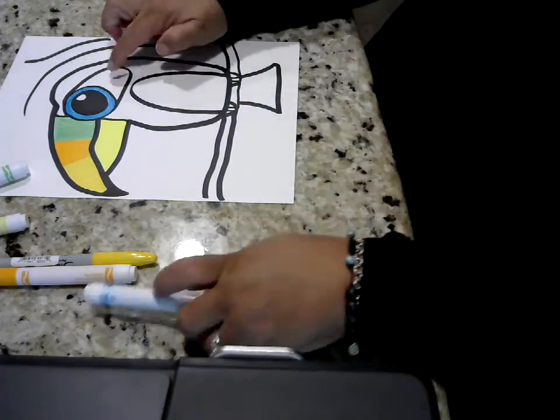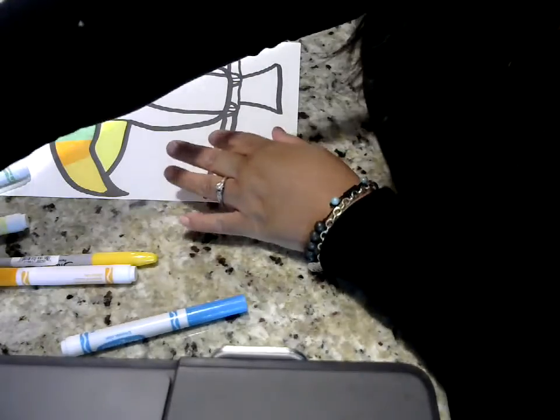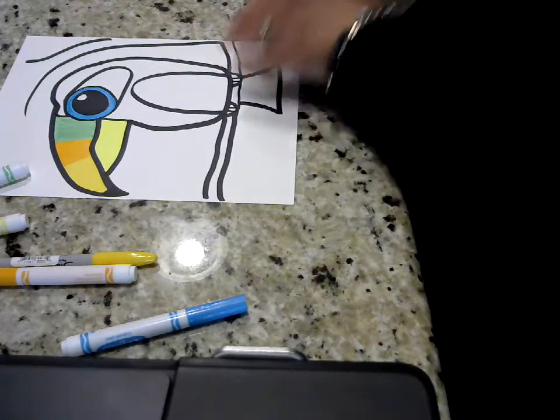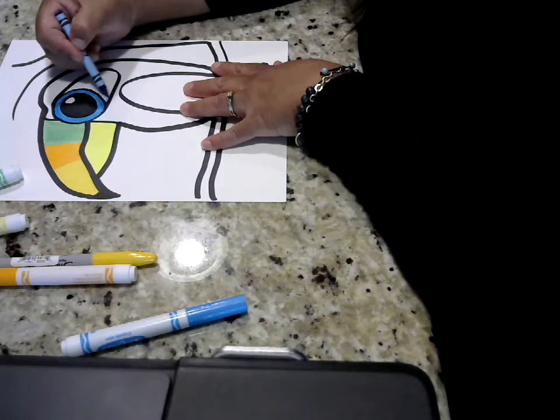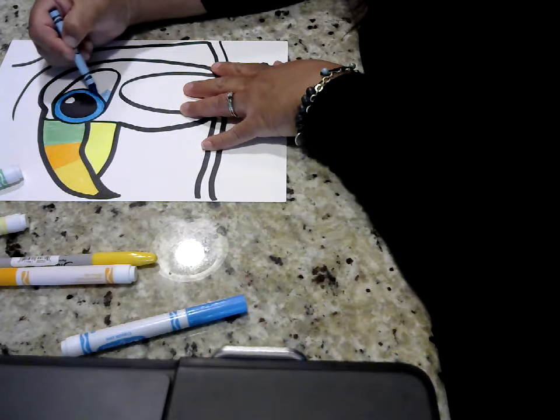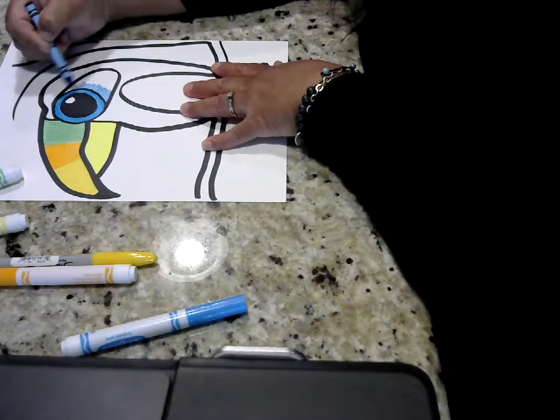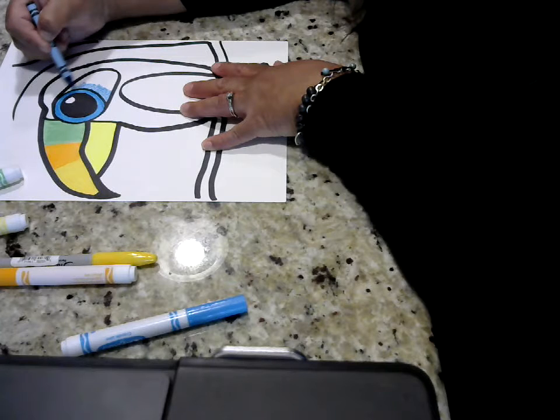And this part right here, we can color that blue. Also, let me use a crayon for this. And we'll just color that part of his feathers in this area around his eye.